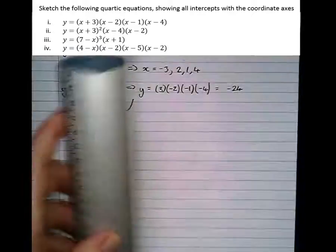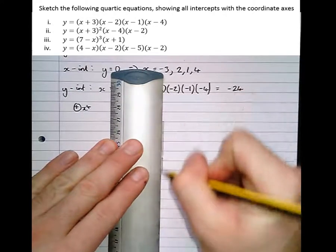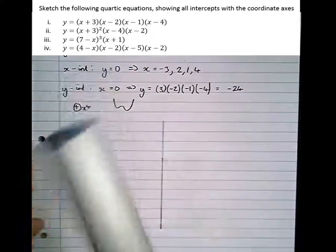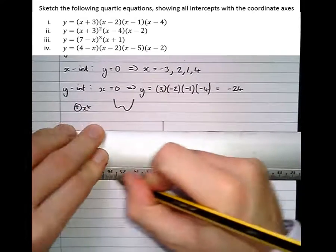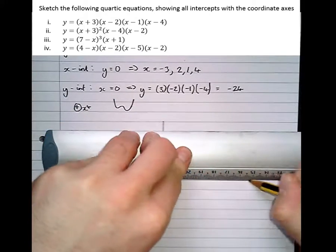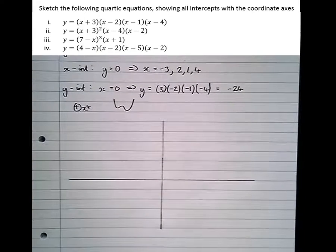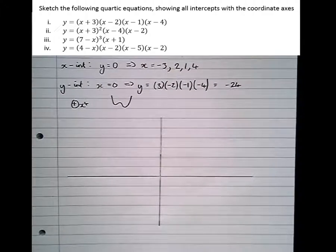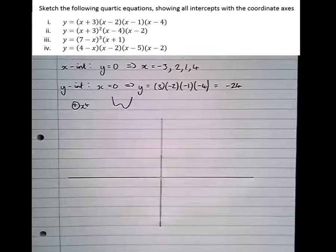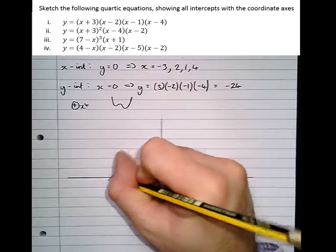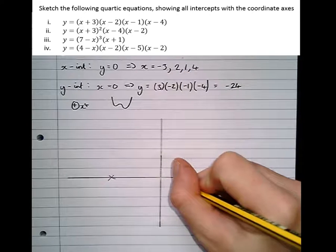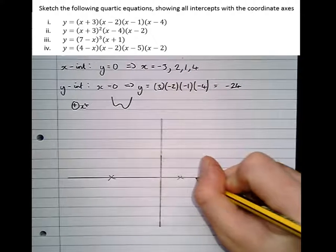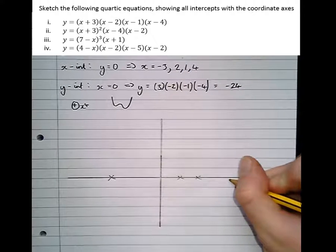So let's draw the axes and get this sketched. Notice I'm using a ruler and a pencil. That means the sketch is presentable, and if there's anything wrong with it, I get to rub it out and have another go, so never do a sketch in pen. The x-intercepts are at minus 3, there's one at 1, 2, and 4.